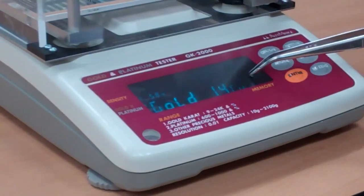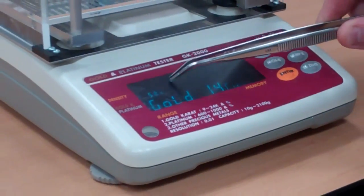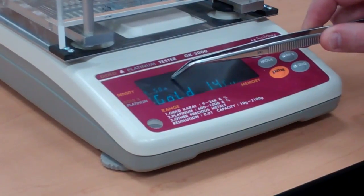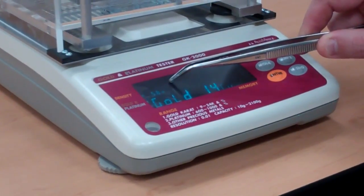After that comes out, you'll see gold, 14 carat. And the top is your net percentage of gold, which is 58% gold.